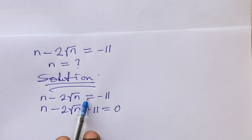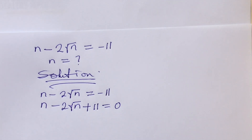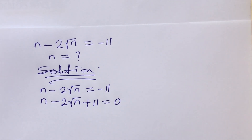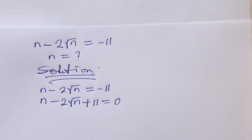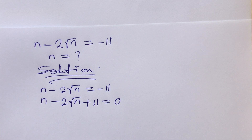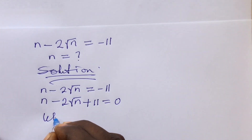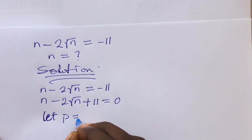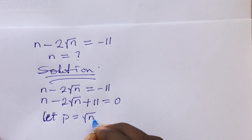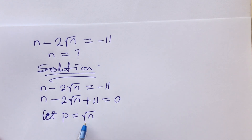Because of the presence of this radical, we may have some challenges solving this equation. So what we do with this radical equation is introduce a variable to represent the square root of n. Let p be equal to the square root of n.